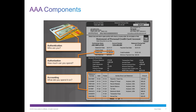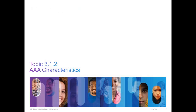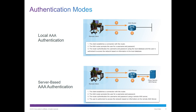Moving past this, we have our AAA characteristics. We can do a local AAA authentication, or we can do a server-based authentication. Local would be local to the device. Server-based would be some type of an additional server. Very commonly on school campuses, you may have a campus-wide wireless, and in order to get on the wireless, you have to provide a username and password. That's a similar authentication mode as server-based. We'll talk more about that when we get into RADIUS and TACACS.